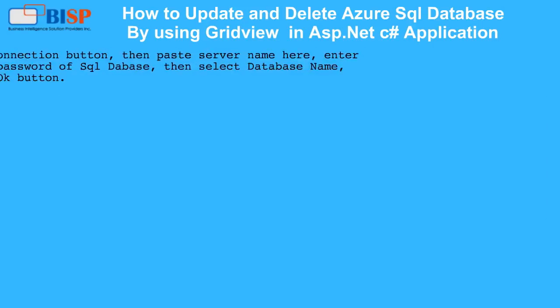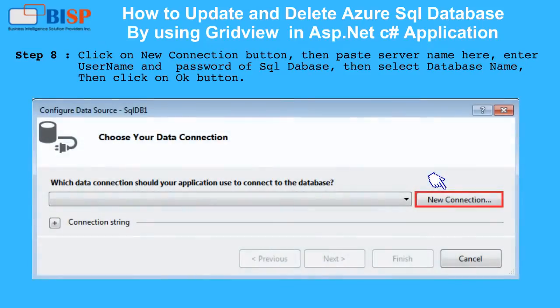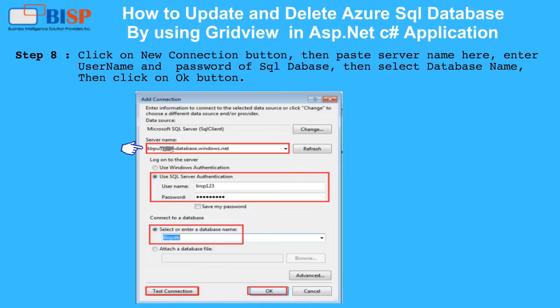Step 8: Click on the new connection button, then paste the server name. Enter the username and password of the SQL database, then select the database name, then click the OK button.